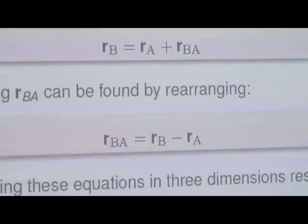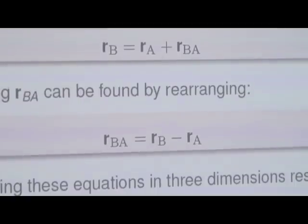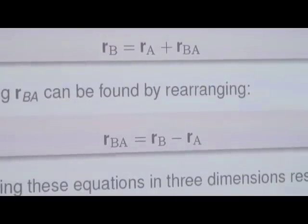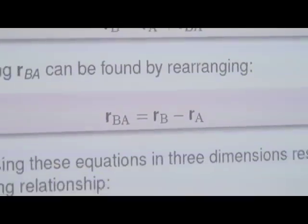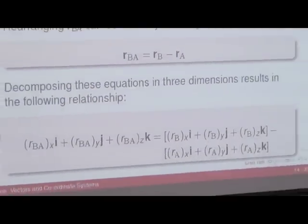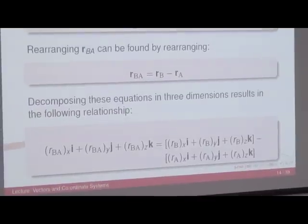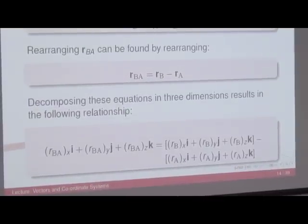We can do the same thing as we did with vector A previously — we can decompose the relative vector into its constituent parts. We take the R B-A vector and obviously we've got an X component, a Y component, and a Z component, and you multiply them by the unit vectors to get vector R B-A. We do the same thing with R B and the same thing with R A.